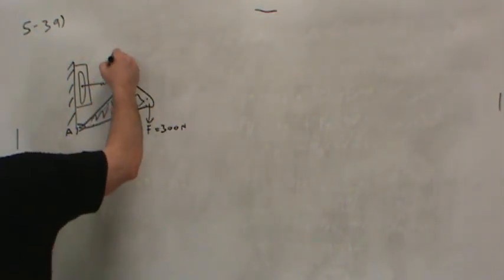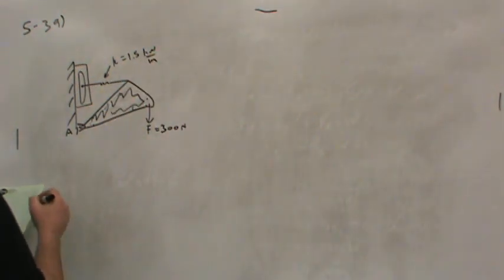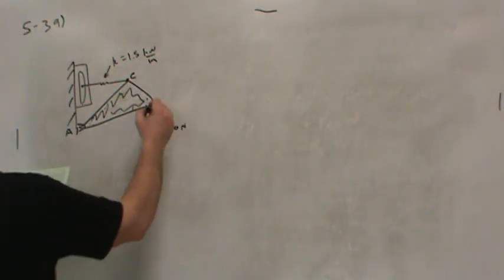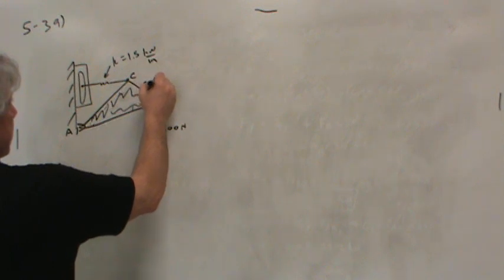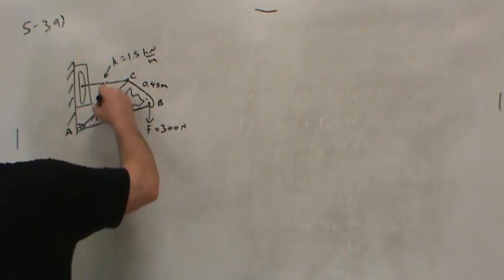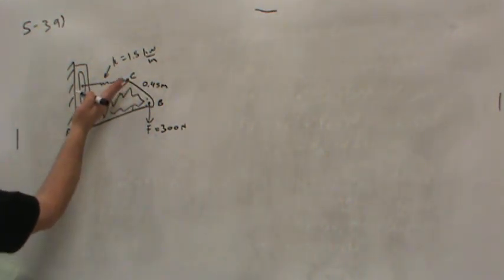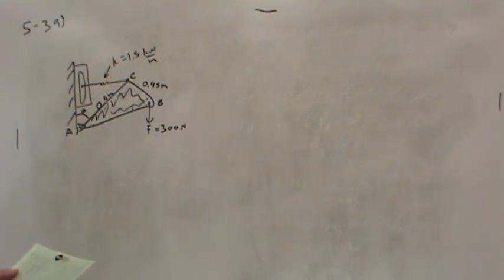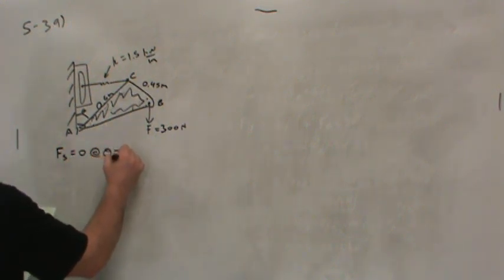There's a force out at the end of 300 newtons and it always acts vertically downward. And here's the spring where they told us the spring constant is 1.5 kN per meter. This is point C where the spring is pivoted, and this is point B over here. The distance between C and B is 0.45 meters and the length along this back side is 0.6 meters. The angle theta is the angle that this makes. So when AC is vertical, the spring has no tension in it.